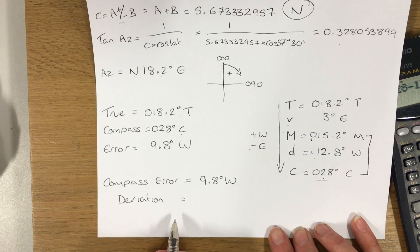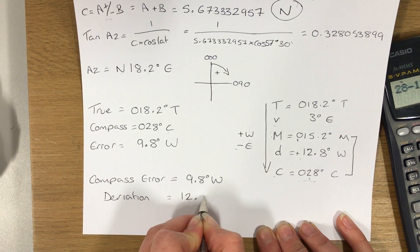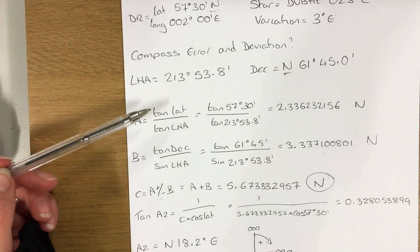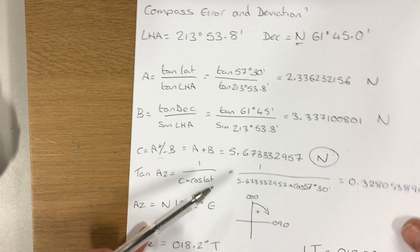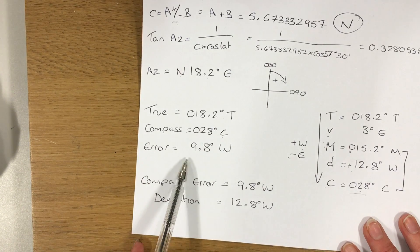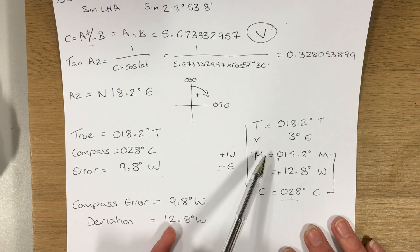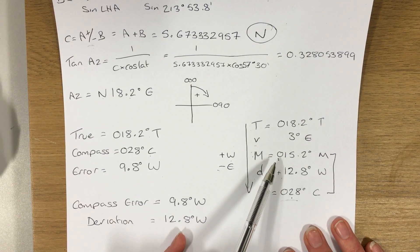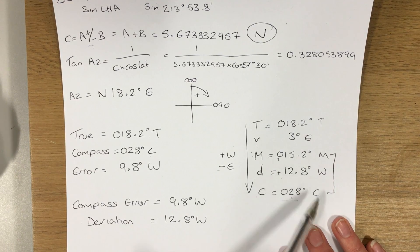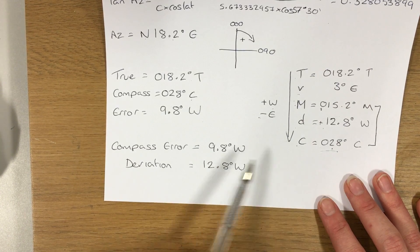So compass error was 9.8 degrees west, and my deviation was 12.8 degrees west. So there we have it. I've managed to find A, B, and C. I used C to find my azimuth and my true bearing. I compared the true with the compass to find my compass error. Compass error is made up of variation and deviation. Variation was given, enabled me to find magnetic. I could compare my magnetic with compass to find deviation. So compass error 9.8 degrees west, deviation 12.8 degrees west.